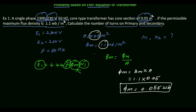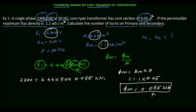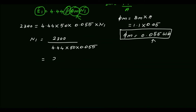Now we calculate the number of turns N1. Substituting into the EMF equation: E1 = 4.44 × F × φM × N1, so 2300 = 4.44 × 50 × 0.055 × N1. Therefore N1 = 2300 ÷ (4.44 × 50 × 0.055) = 2300 ÷ 12.21, which gives approximately 188.37.